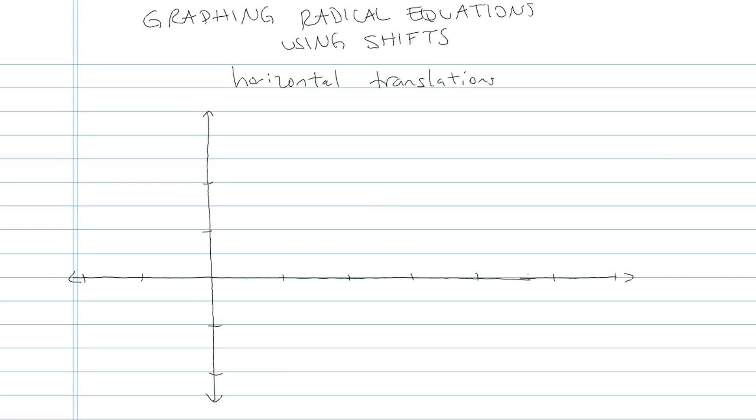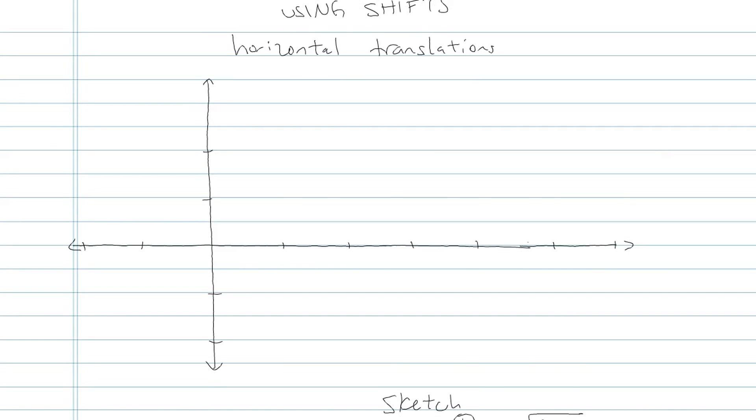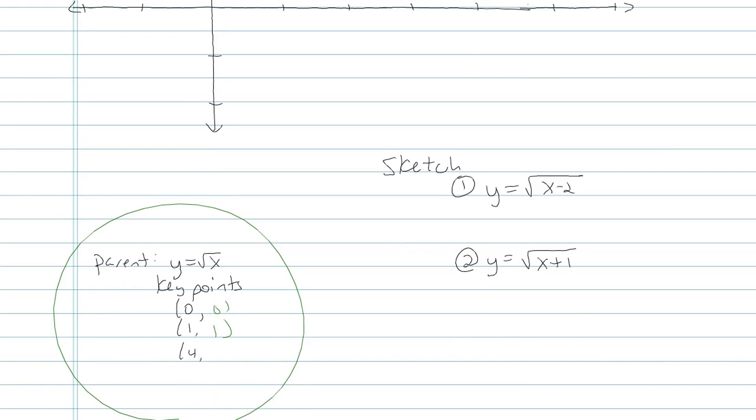The parent function y equals square root of x has a few key points, and I find these key points by choosing x values that are easy to take the square root of, like 0. Square root of 0 is 0, square root of 1 is 1, square root of 4 is 2.